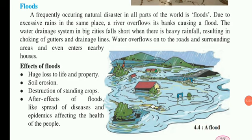Flood is frequently caused by natural disasters in all parts of the world. When there is heavy rainfall, the river overflows its banks and causes a flood. In big cities, the drainage system becomes inadequate during heavy rainfall — the gutters and drainage lines fill up and overflow, causing the roads and surrounding areas to flood.